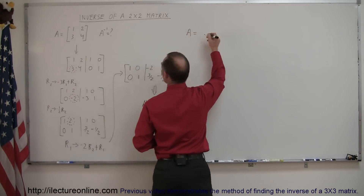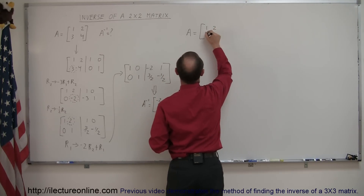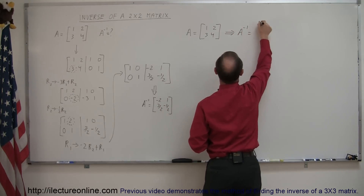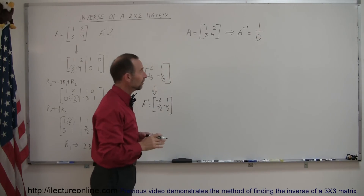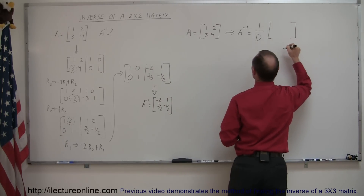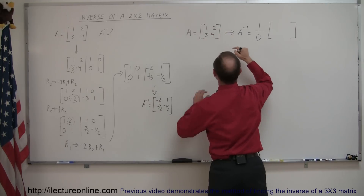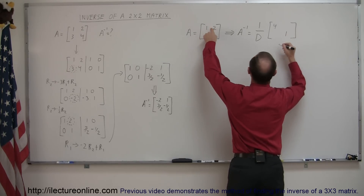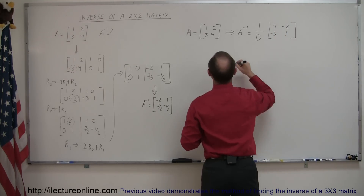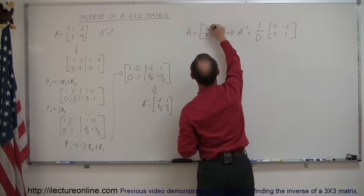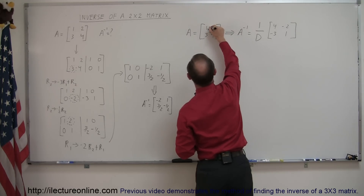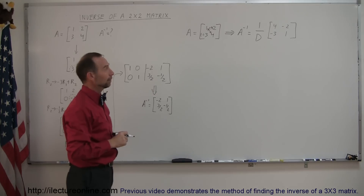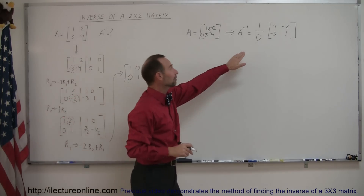If matrix A equals [1, 2; 3, 4], then the inverse equals 1 over the determinant of A, multiplied by a modified matrix where we swap the two diagonal elements — 4 goes to the top-left and 1 comes to the bottom-right — and place negatives in front of the other two elements, giving negative 2 and negative 3.